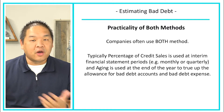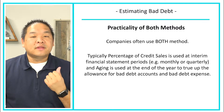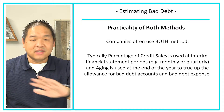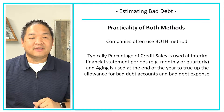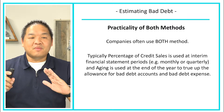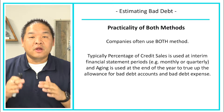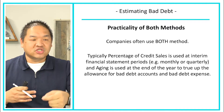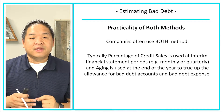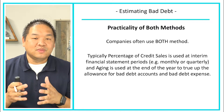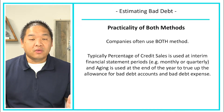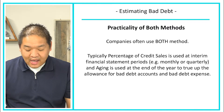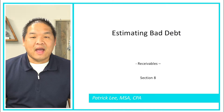Most companies actually use both methods. They use the percentage of credit sales for quarterly reports because it's quicker, but at year-end they switch to the AR aging method because it gives a more precise number for the annual financial statements. Think of the percentage of credit sales as an interim calculation — a good ballpark — and the AR aging as the more precise year-end approach. Companies use both: one for ease, one for precision.